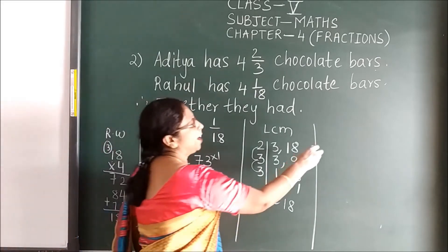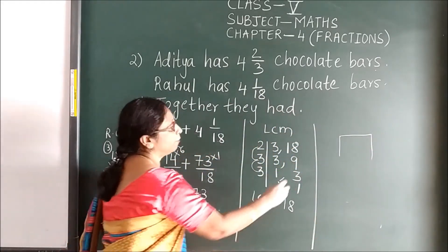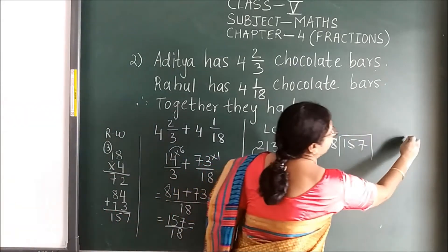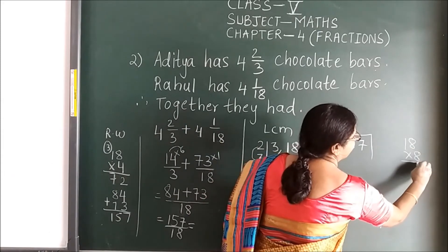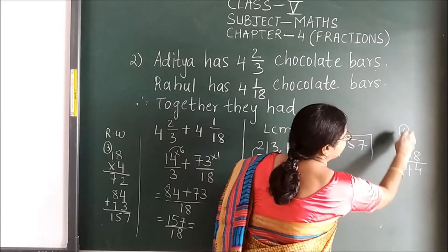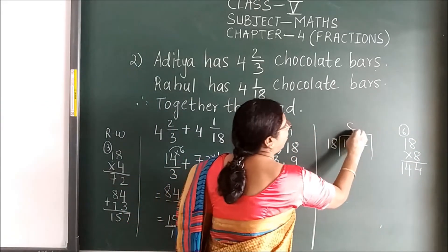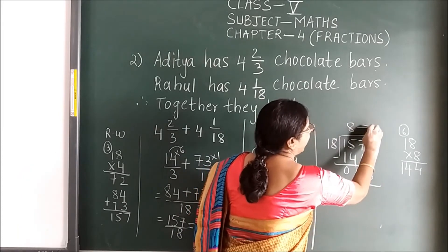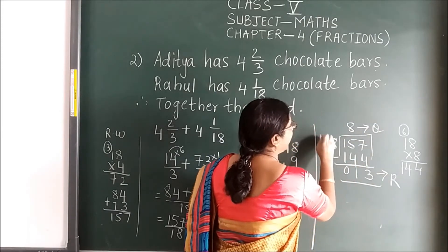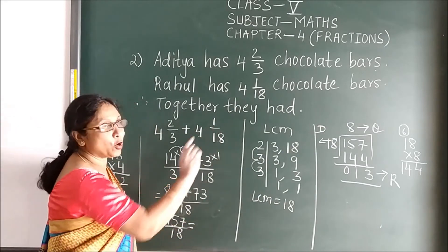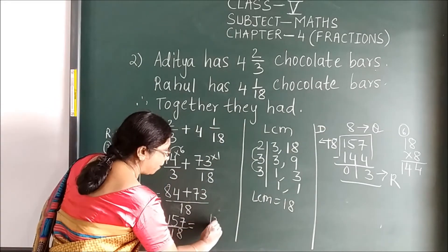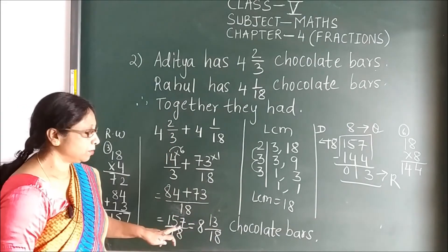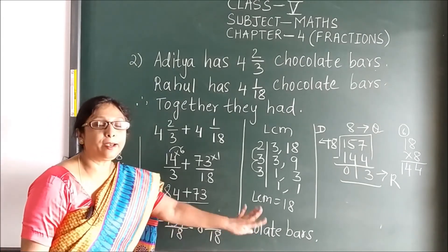We want the answer in mixed form, so divide 157 by 18. 18 × 8 = 144, remainder is 13. Quotient is 8, remainder is 13, divisor is 18. Writing in mixed form — remainder up, divisor down, quotient to the side — gives 8 and 13/18 chocolate bars altogether.